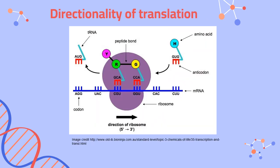Similarly, we have directionality in translation. Remember that translation is using that messenger RNA transcript to code for a strand of amino acids — that polypeptide chain. We are again going to move in that 5 prime to 3 prime direction, so the ribosome will slide along the messenger RNA from its 5 prime end to its 3 prime end.